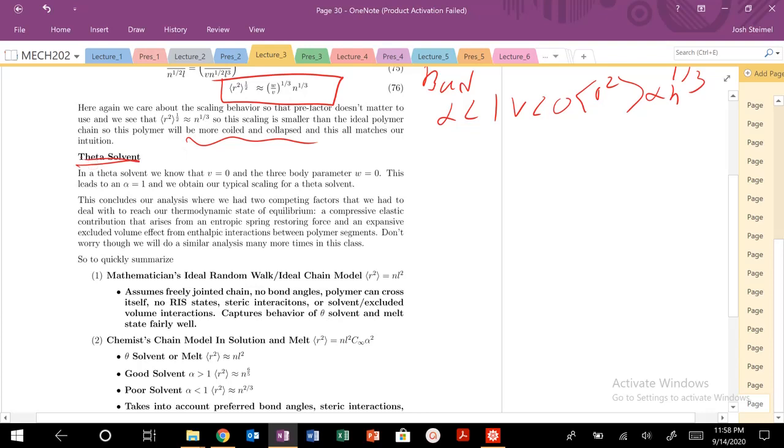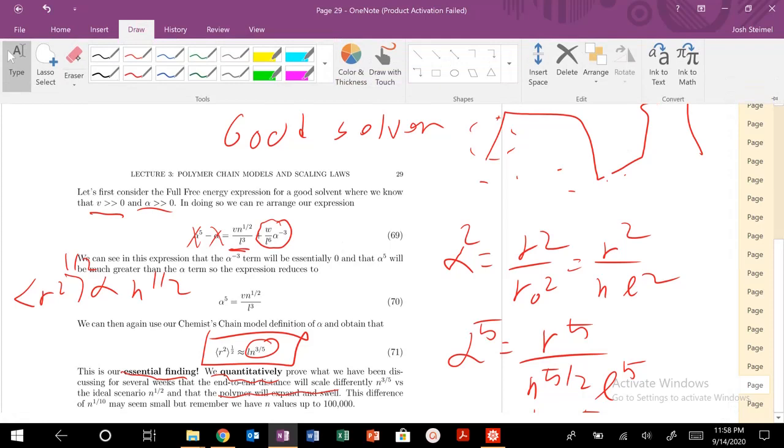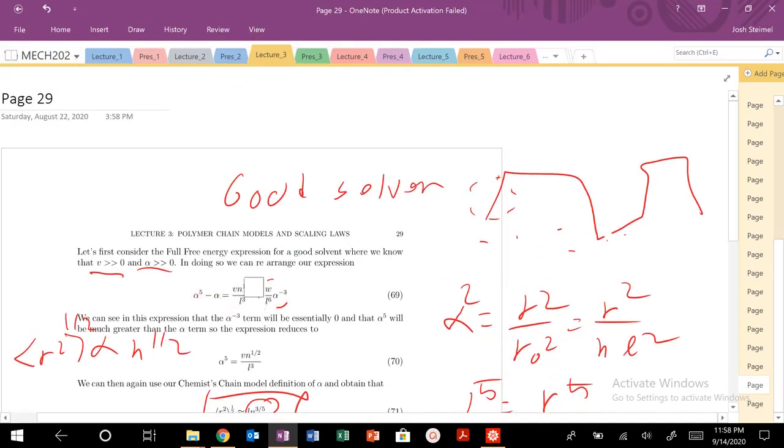Now, in a theta solvent, just to kind of finish up this discussion, we know that our excluded volume is 0, our three-body parameter is 0. So let's go back to this expression right here. So if my V is 0, my V is 0, this term cancels out. My V is 0, my W is 0, the three-body term, and then I know that my alpha is just going to be equal to 1. So that'll solve alpha to the 5th equals alpha. 1 will solve that expression.